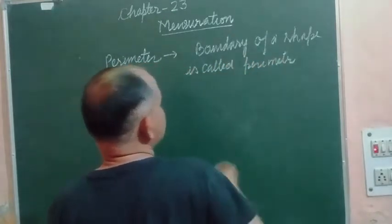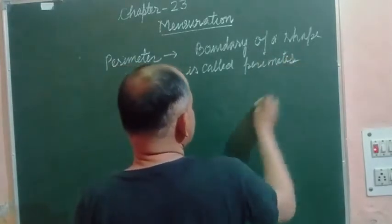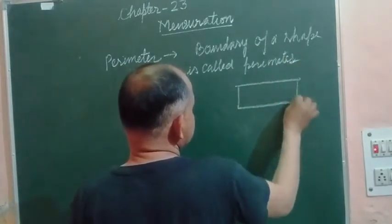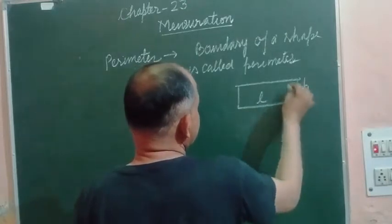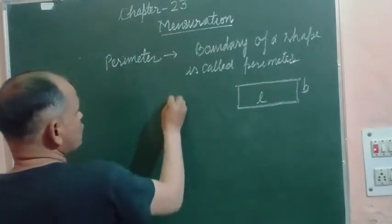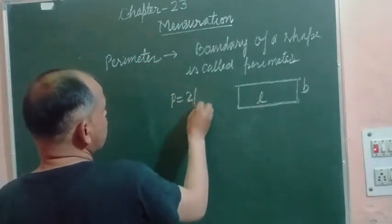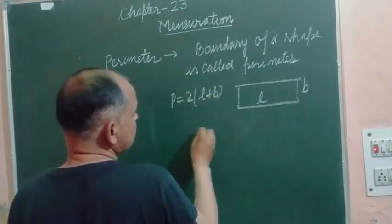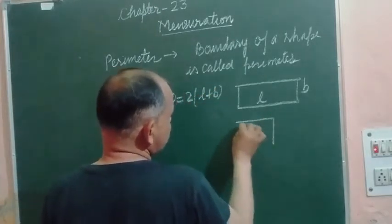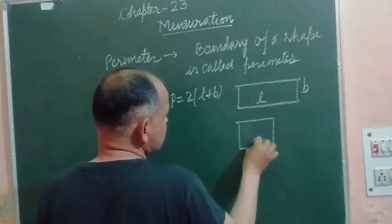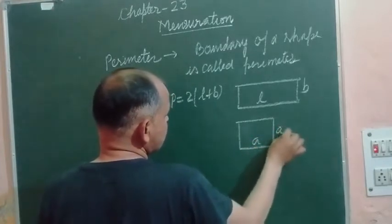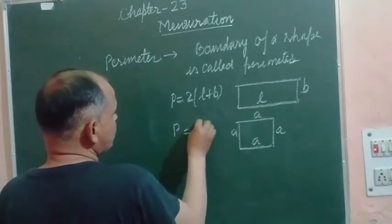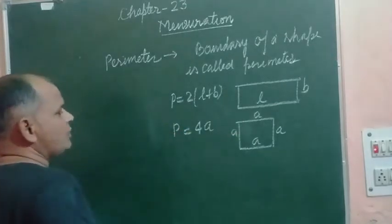So perimeter of a few shapes — like rectangle: a rectangle has length L and breadth B, so perimeter of rectangle equals 2 times length plus breadth. And perimeter of a square: all sides are equal, each side is A, so perimeter of square equals 4 times side.